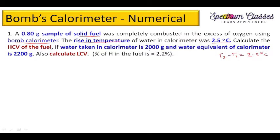Calculate the HCV of the fuel if water taken in the calorimeter is 2000 grams — this is capital W. The water equivalent of the calorimeter, which is small w, is 2200 grams. We have to calculate the gross calorific value using the bomb calorimeter.